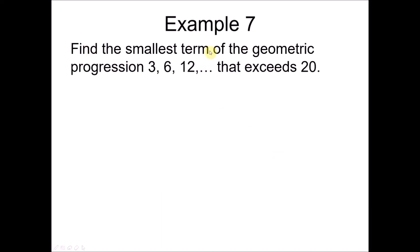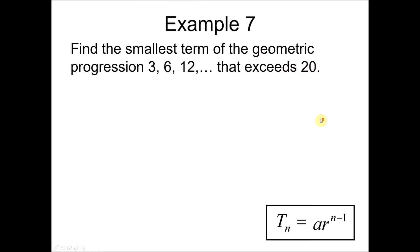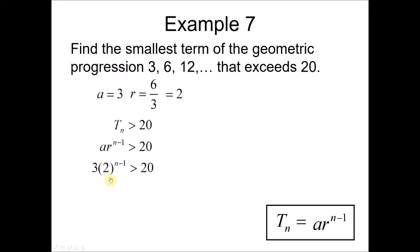Example 7: find the smallest term of the geometric progression 3, 6, 12 that exceeds 20. Here a = 3, r = 6/3 = 2. We want tn > 20, so 3 × 2^(n−1) > 20. Dividing by 3 gives 2^(n−1) > 20/3. To solve for n in the exponent, we use logarithms — taking log of both sides lets us apply the power law to bring (n−1) to the front.